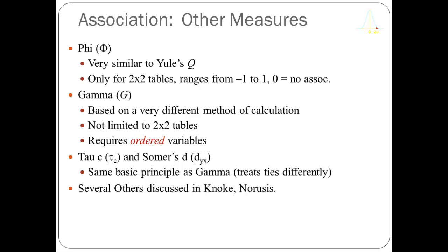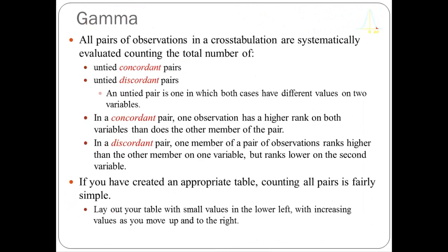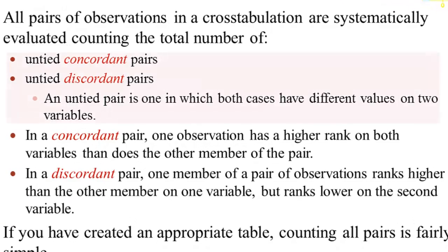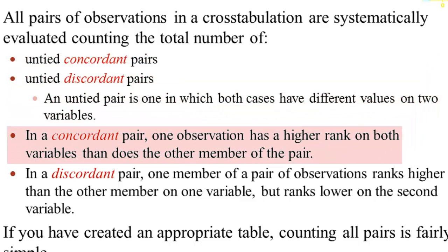Gamma has a particular use: it applies when your two variables are not only discrete but also orderable. To calculate gamma you have to calculate how many untied concordant pairs there are and how many untied discordant pairs there are. It's actually pretty mechanical once you get the hang of it, but at first it can look like a lot of work.